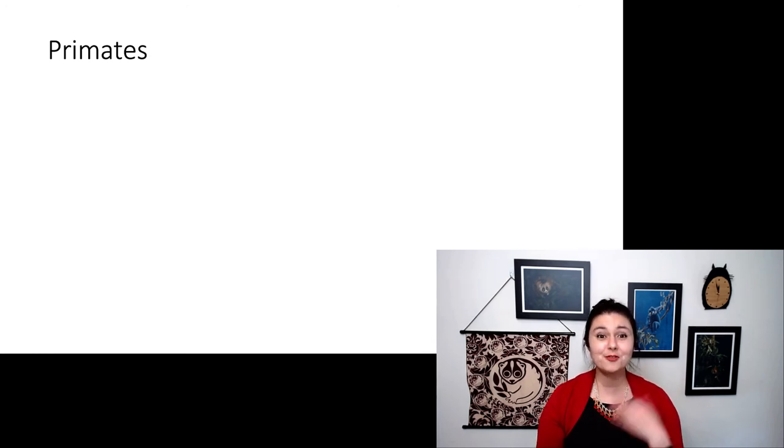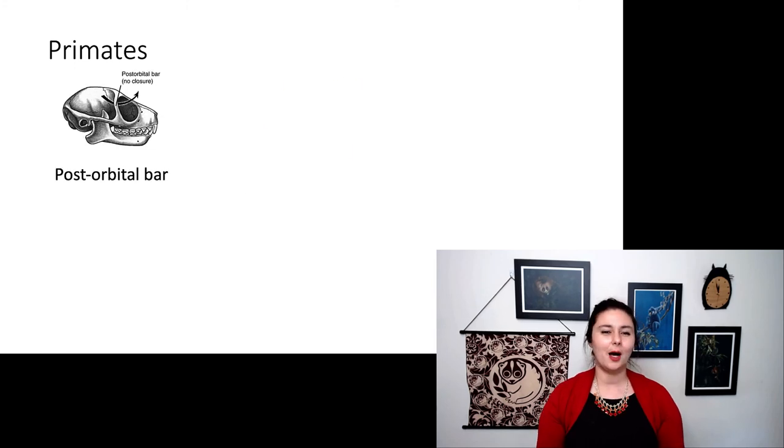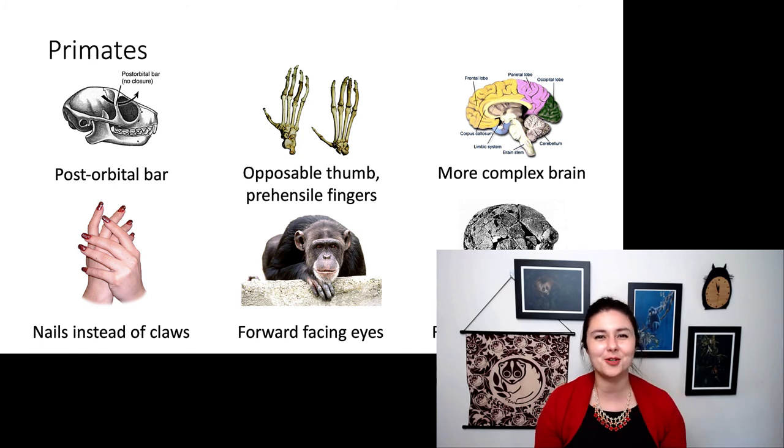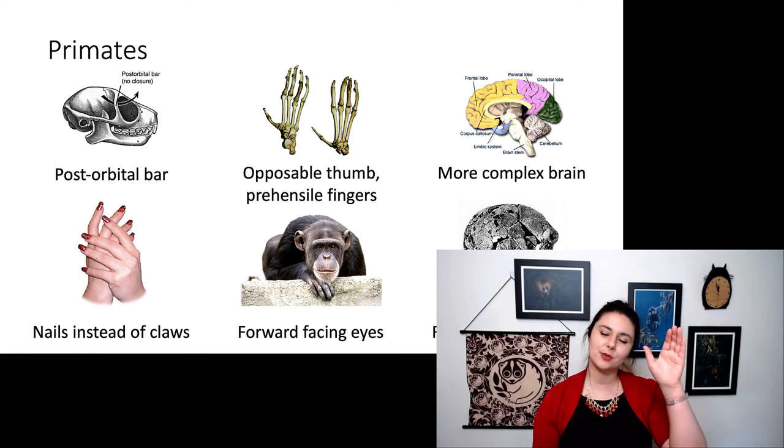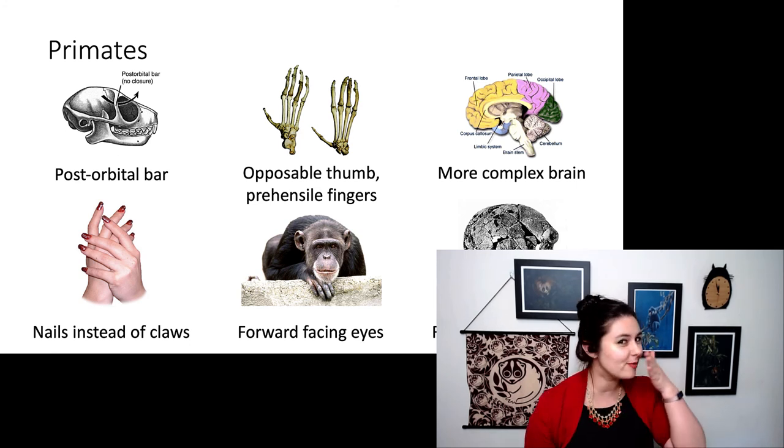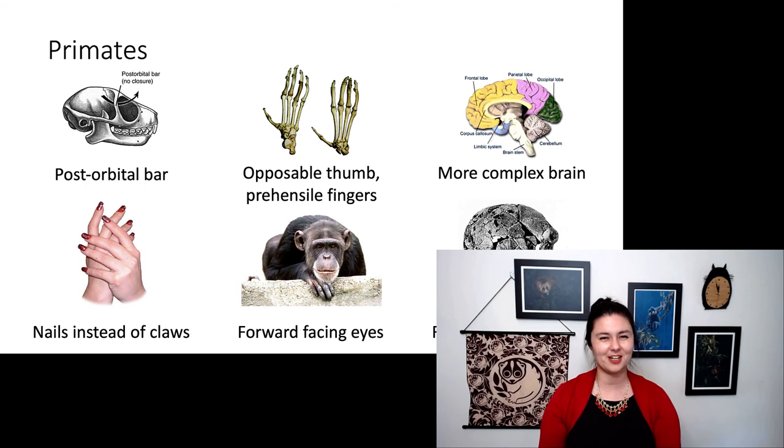But we've finally made it to primate. Do you remember what derived traits that primates have? You might want to go and revisit the lecture on what it means to be a primate. Things we see here, we have this post-orbital bar. We have a full ring of bone around our eyeball. We have an opposable thumb but also prehensile fingers. Our brain is larger and more complex. We have nails instead of claws. Our eyes are facing forward and we have a relatively short snout when we compare ourselves to other mammals.